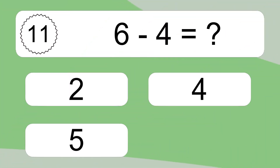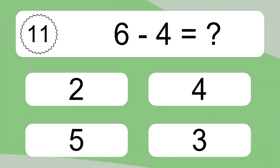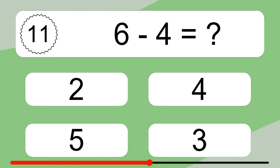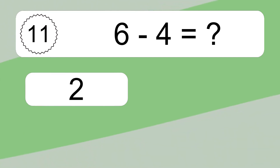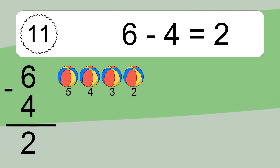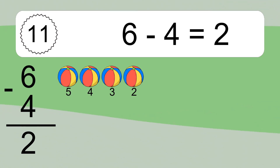6 minus 4 equals what? 6 minus 4 equals 2. Let's count it: 5, 4, 3, 2.